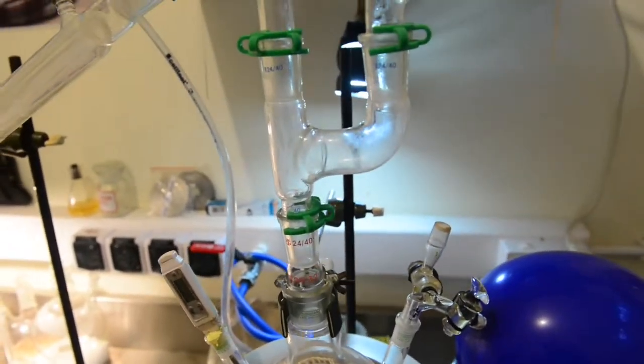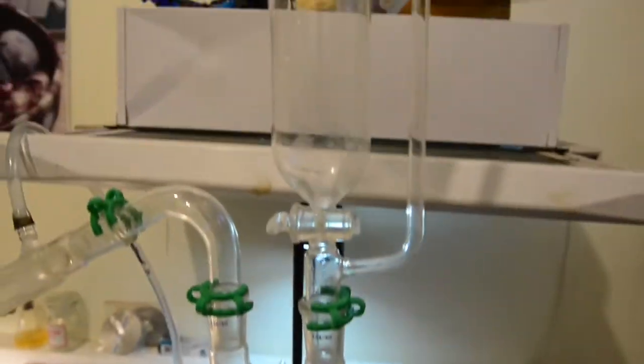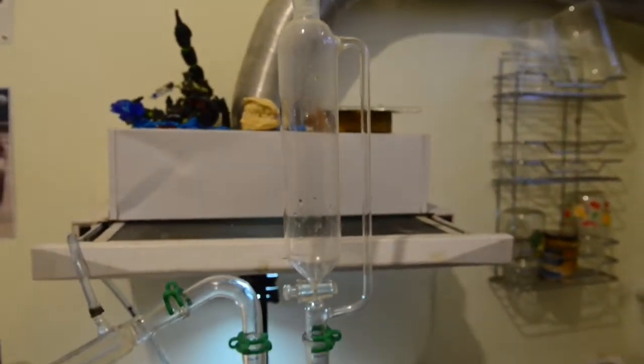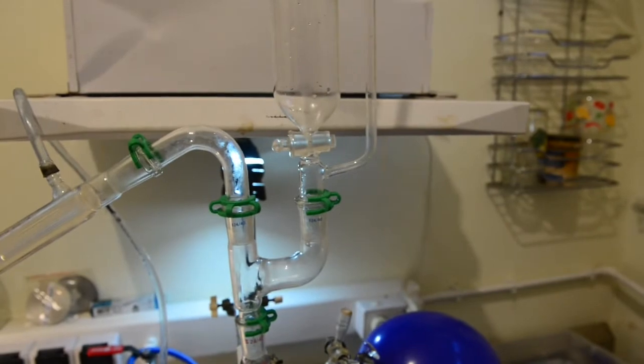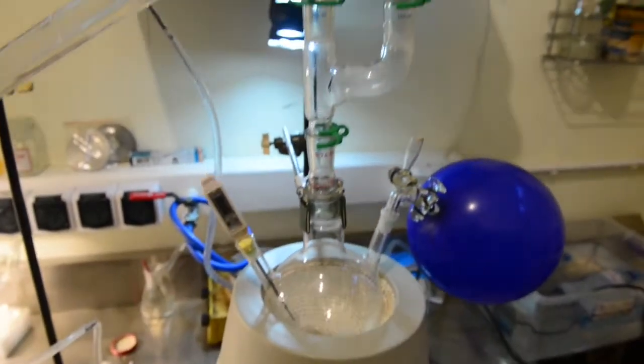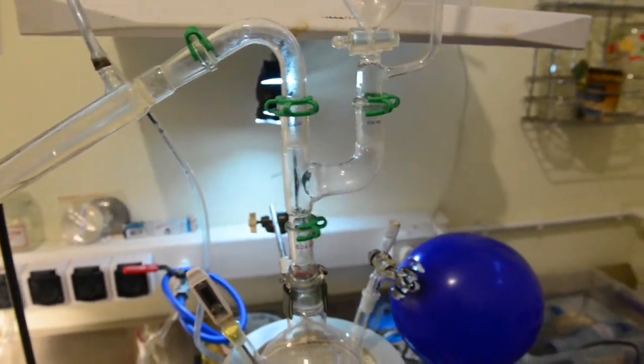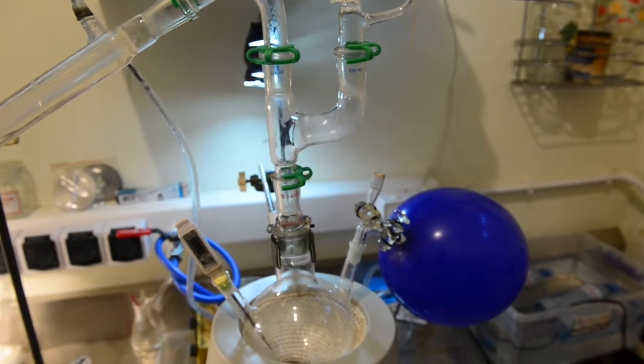We need a strong heating source, like heating mantle and we need to reach 235 degrees Celsius. As you can see, we have attached pressure equalized addition funnel, because we have to add portions of formic acid later on. The system must remain sealed from the atmospheric oxygen all the time.